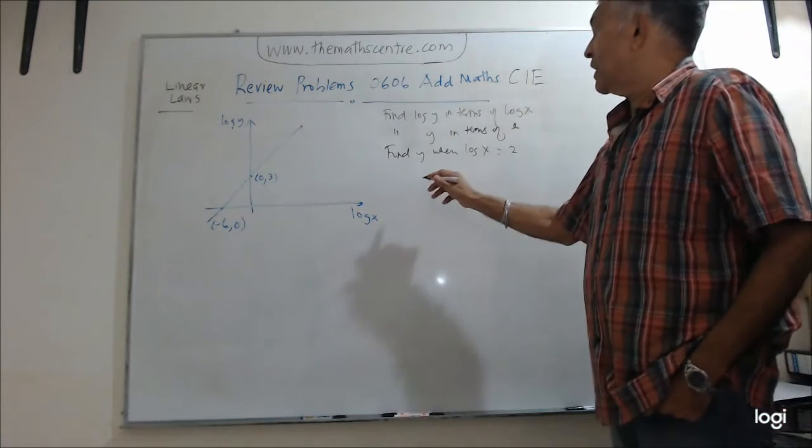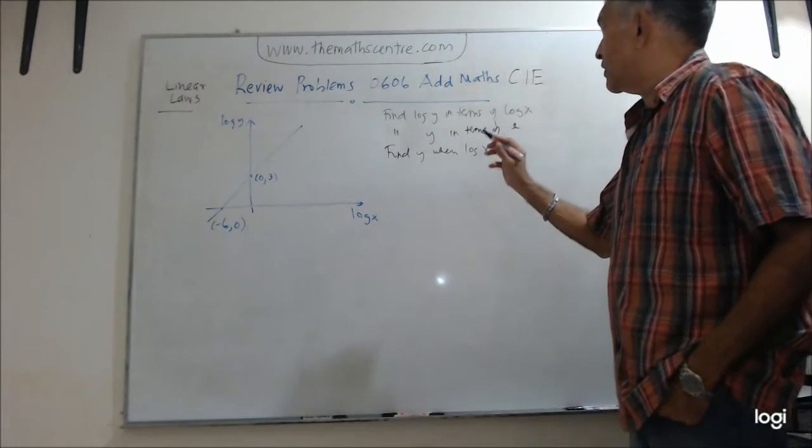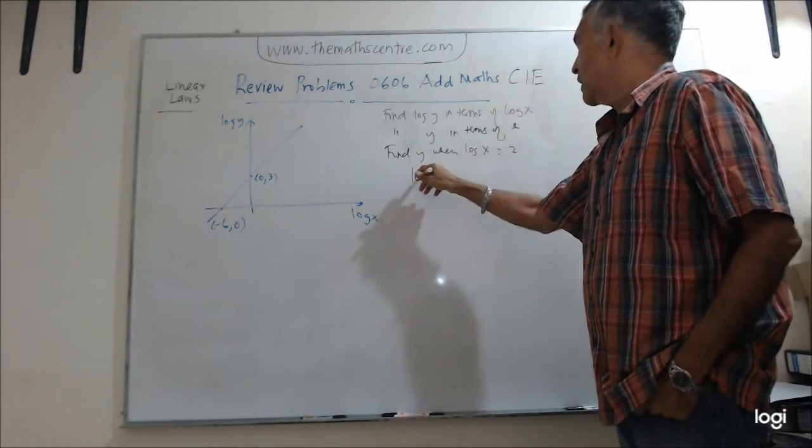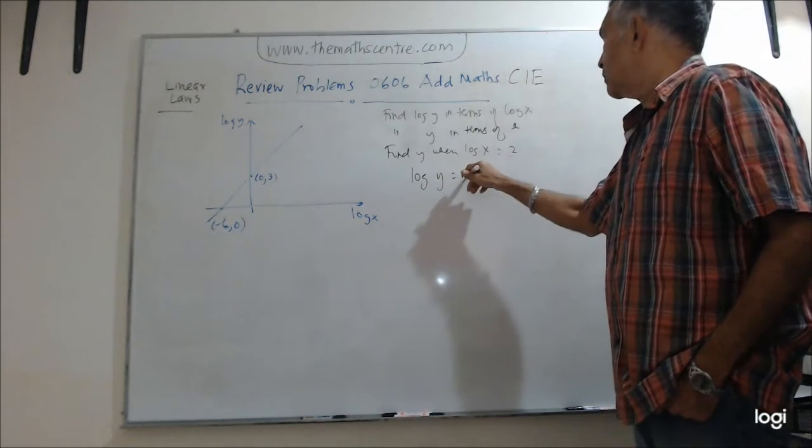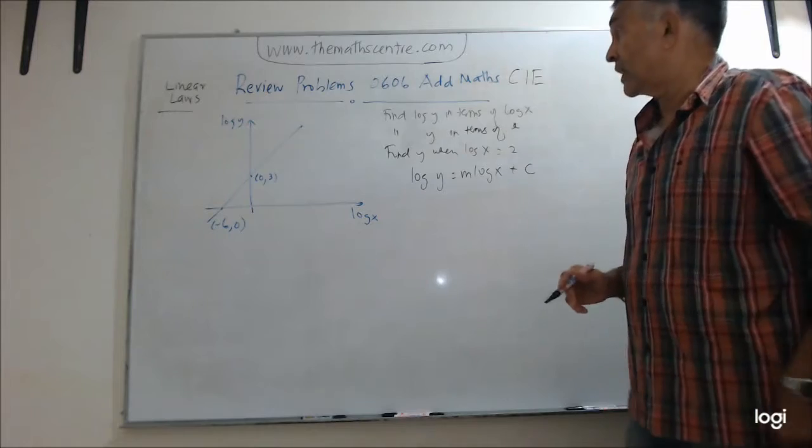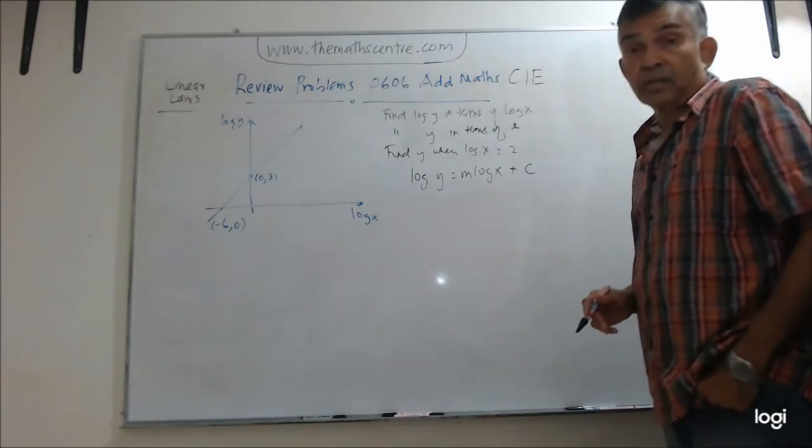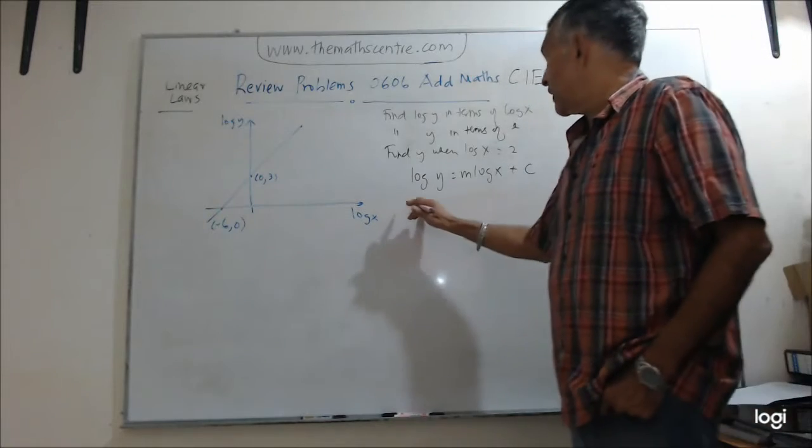Okay, good. So let's start, right? First off, when you want to find log y in terms of log x, let me write the general relationship first. Okay, I have log y equals to m log x plus c. This is your vertical axis equals to your gradient times your horizontal axis plus c. So let's find m first.